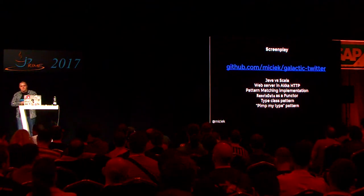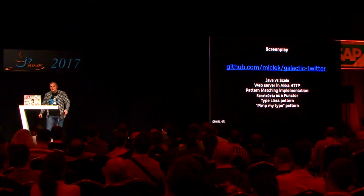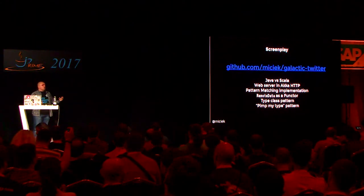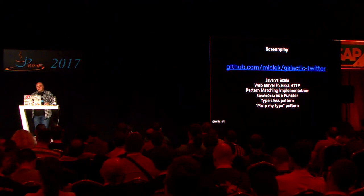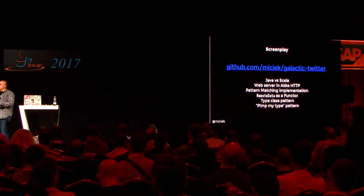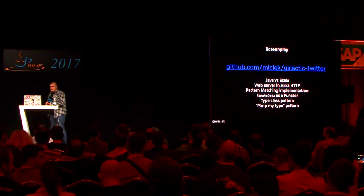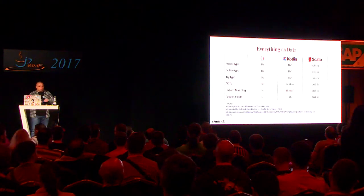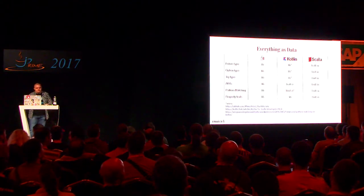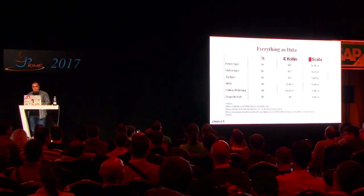The screenplay is available at this GitHub repository — all the problems shown in the presentation are there with comments. There are both Scala and Java implementations of the same application so you can see side-by-side differences. You can see how the web server is implemented in Akka HTTP in both Java and Scala, how pattern matching is implemented, why RemoteData is a functor and how to use that, and the type class pattern and pimp my type pattern used in Scala. The good news is we don't have to switch languages — we can start using these techniques in Java or Kotlin today using available libraries.